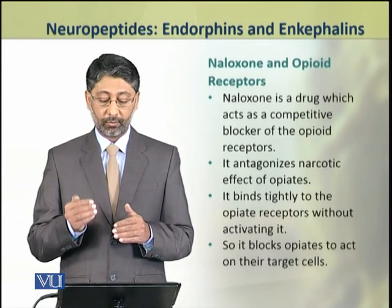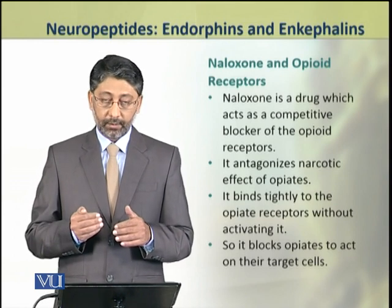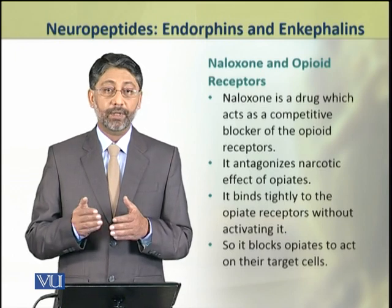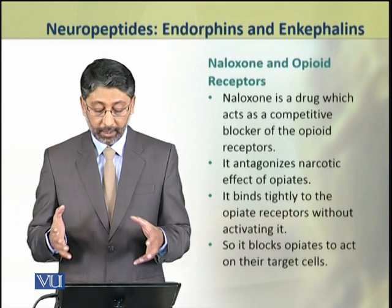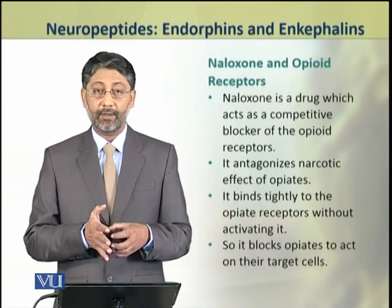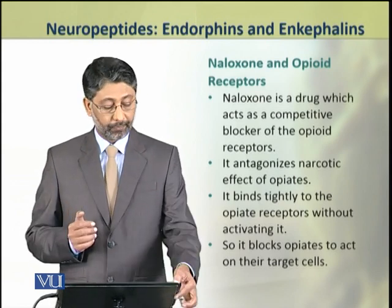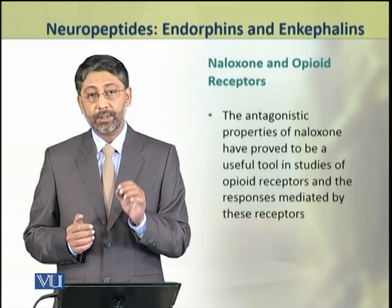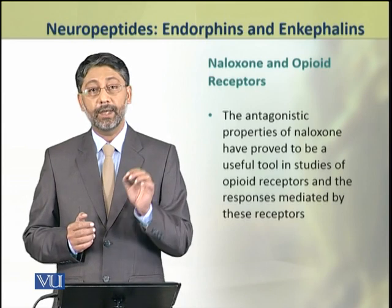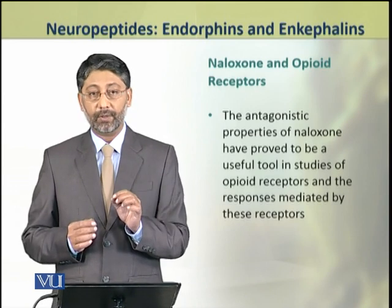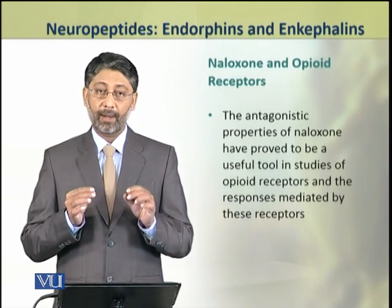It antagonizes the narcotic effect of opiates. When naloxone attaches to the receptor, the receptor does not get activated, and the cascade of enzyme reactions does not start. Therefore, it prevents opiates from acting on the target cells — their action on target cells does not occur. These antagonistic properties of naloxone have been extensively used in the detailed study of opiate receptors and in understanding their mechanism of action.